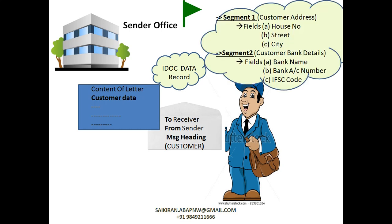Each data record is divided into different segments, and each segment is nothing but a collection of fields. So here you can see you are writing a customer data letter, and in the customer you have different segments — customer address and customer bank details. Customer address does not hold data directly; it holds fields, and each field holds the data. So each segment is just a heading like customer address and customer bank details, but the segment comprises fields which are supposed to hold the data.